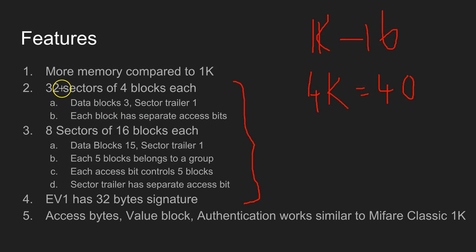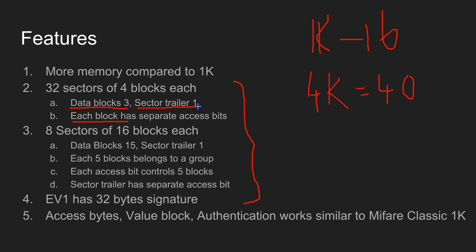Out of these 40 sectors, the first 32 sectors are compatible with 1K — that is, the first 32 sectors have four blocks each. Out of these four blocks, three blocks are used to store data and one block is for the sector trailer. The next consecutive eight sectors have got 16 blocks each, out of which 15 blocks are used to store data.